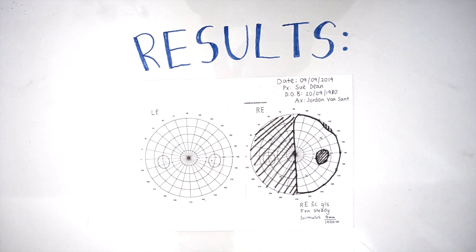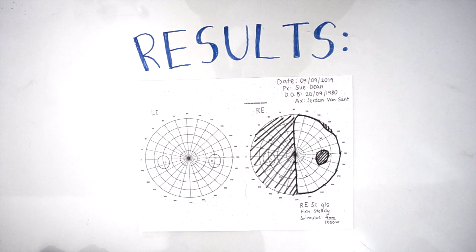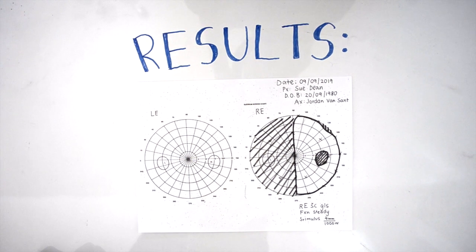Final interpretation of the results show a left hemianopia of the right eye which is caused by a lesion of the right optic tract.